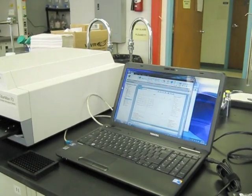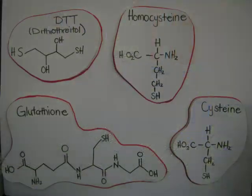Each group will get two known thiols, either DTT, homocysteine, cysteine, or glutathione. We're going to make six concentrations of one milliliter thiol solutions for each thiol.